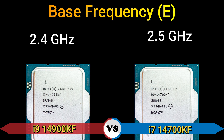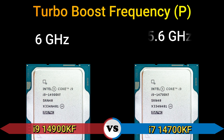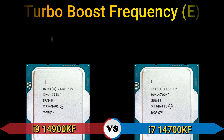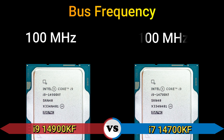Base frequency — efficient cores: 2.4 GHz and 2.5 GHz. Turbo boost frequency — performance cores: 6 GHz and 5.6 GHz. Turbo boost frequency — efficient cores: 4.6 GHz and 4.3 GHz. Base clock: 100 MHz.